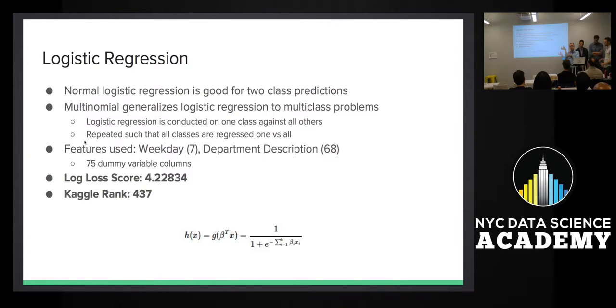For those not familiar with logistic regression, if you know about linear regression where you're trying to minimize the mean squared error, in this case you're trying to minimize this function right here. Logistic regression is usually great for classification problems, especially if there are only two classes, if it's a zero or a one, yes or no. Since there were so many different classes, I used multinomial logistic regression, which generalizes logistic regression to multi-class problems.